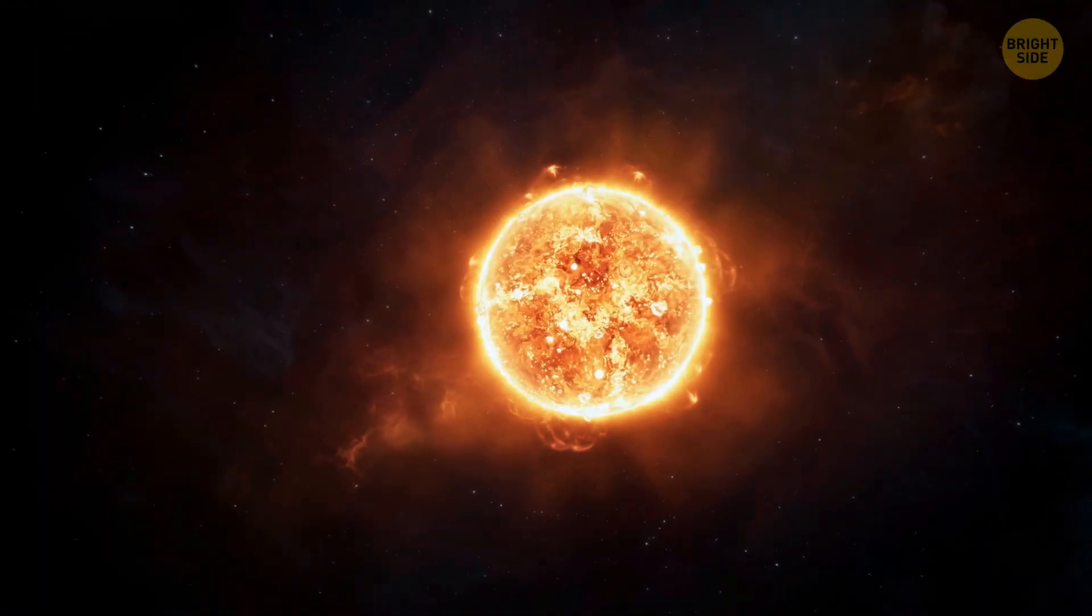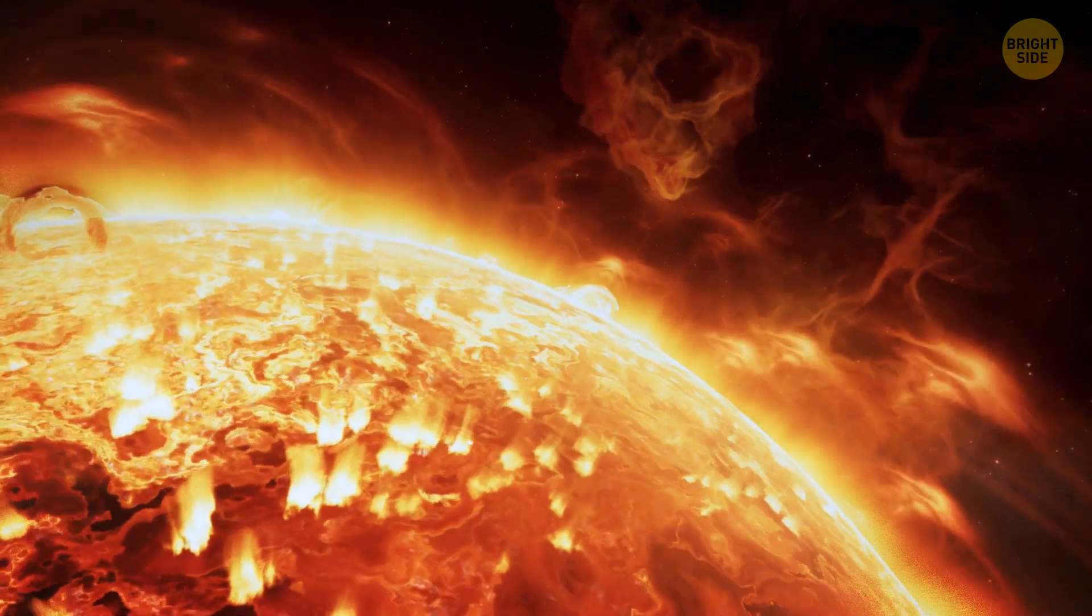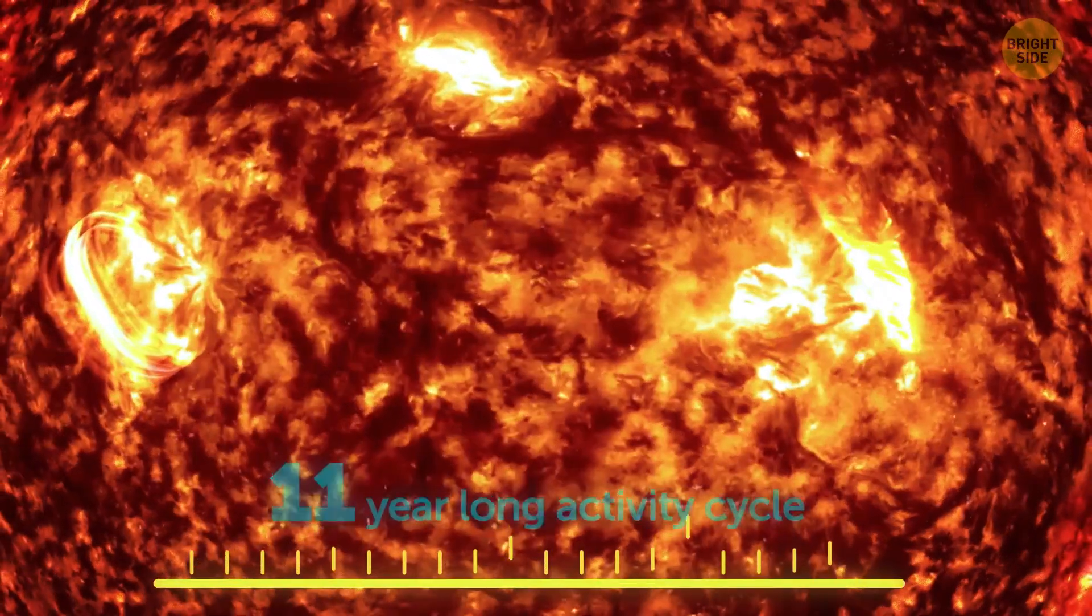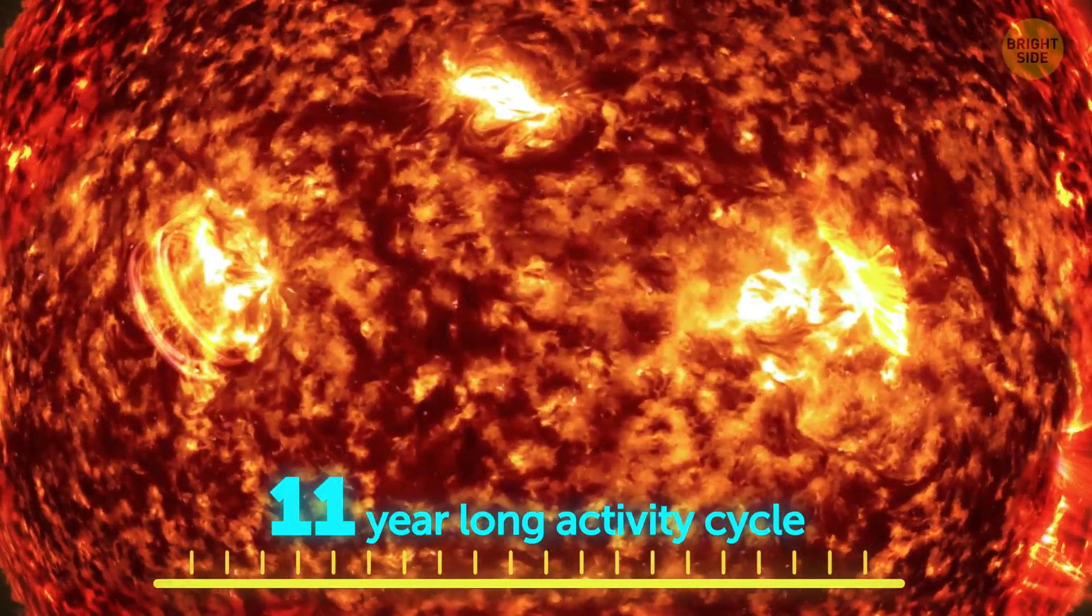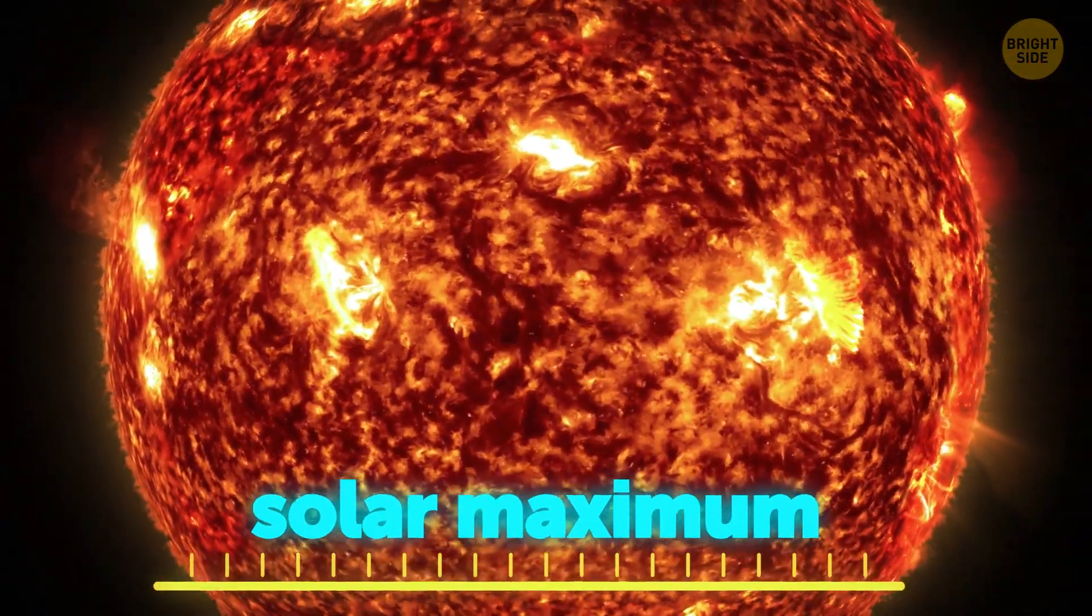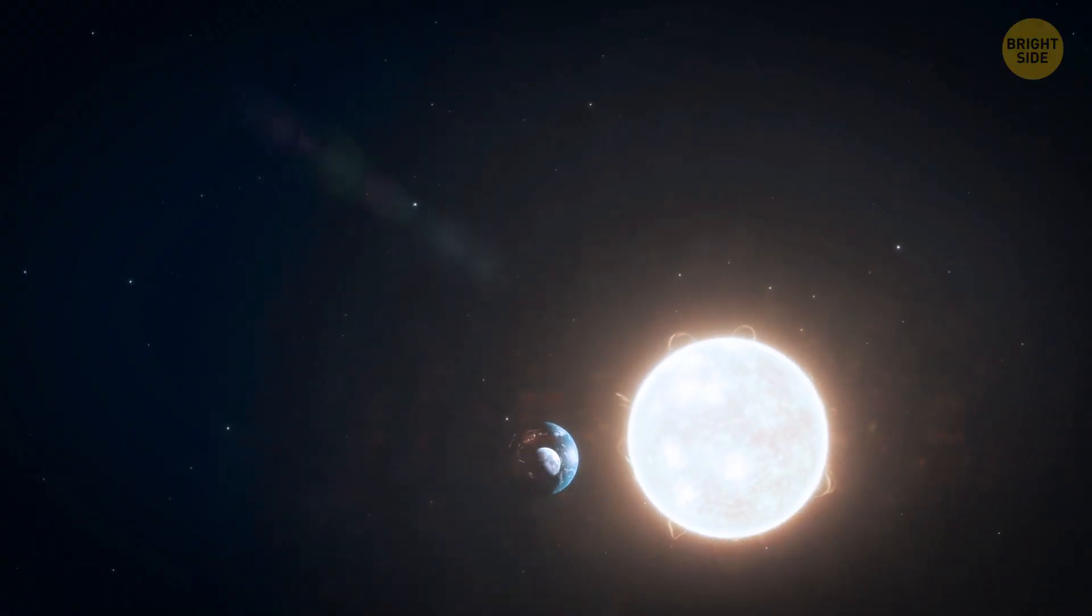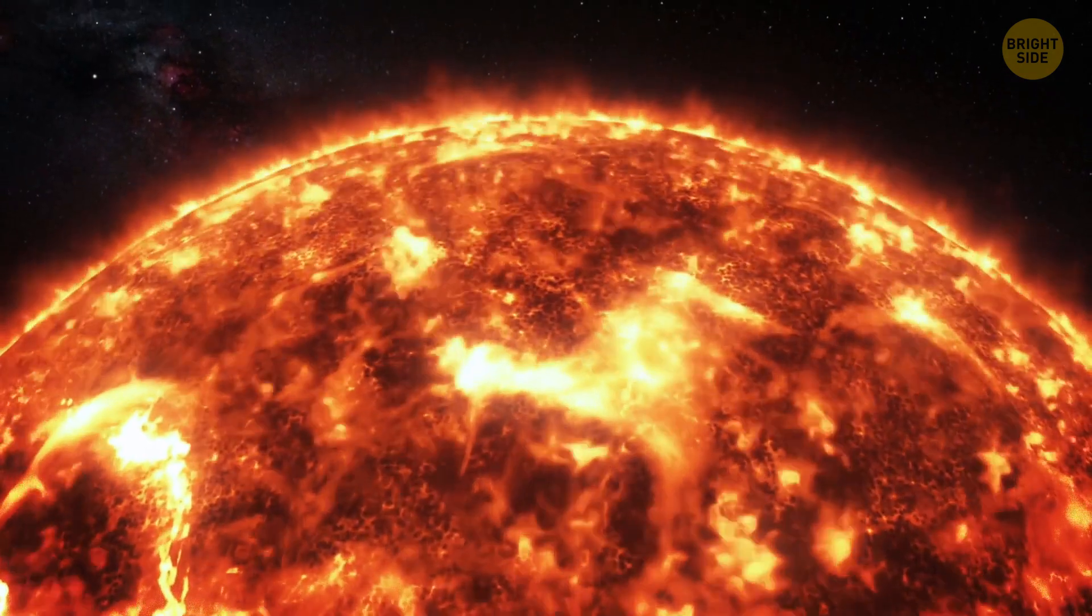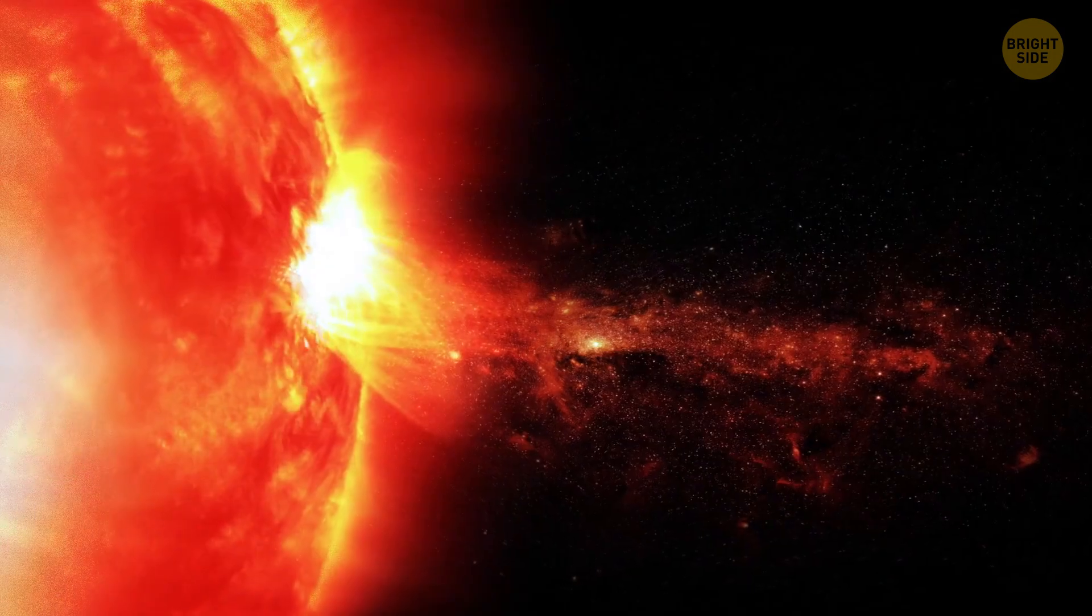All these extreme solar phenomena – CMEs, sunspots, and solar flares – get much more intense during the peak of the Sun's 11-year-long activity cycle. It's known as solar maximum. Right before this event, the Sun steps up its activity. It starts to spit out giant blobs of fiery plasma, amidst powerful streams of radiation, and grows planet-sized spots.